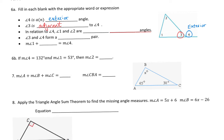In relation to angle 4, thinking about where 4 is, what can we say about angle 1 and angle 2? Angle 1 and angle 2 are non-adjacent to 4. Angle 3 was adjacent to 4 — it was next to it. Angle 1 and 2 are non-adjacent, and they're also on the interior of that triangle. So we would say non-adjacent interior angles.